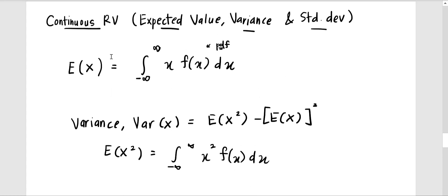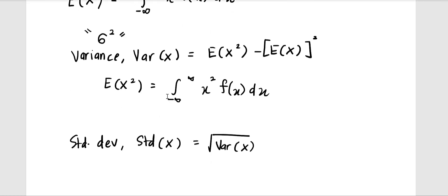The expected value of x can be represented using the symbol μ, which means the mean. For the variance, you can use the symbol σ², and for the standard deviation, we use the symbol σ.